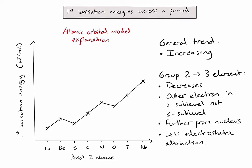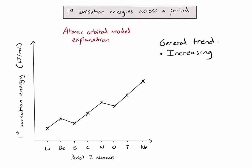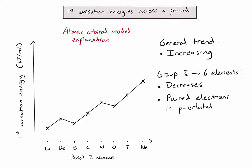This also explains the drop between magnesium and aluminium in period 3. The second exception is between the group 5 and group 6 elements — nitrogen and oxygen in this example. We explain this decrease due to repulsion between paired electrons in a P orbital, which means removing one of those electrons is slightly easier than expected. That is how we explain the general trend and the two exceptions in periods 2 and 3.